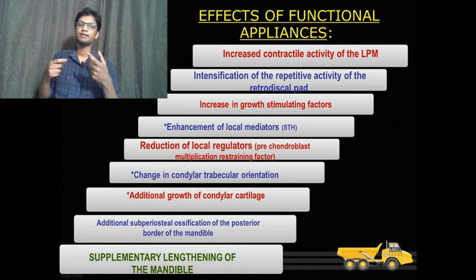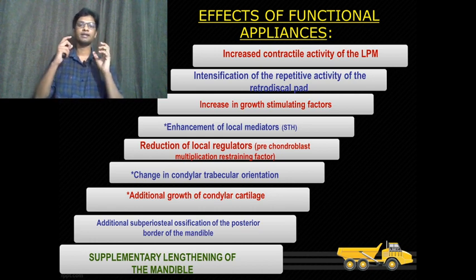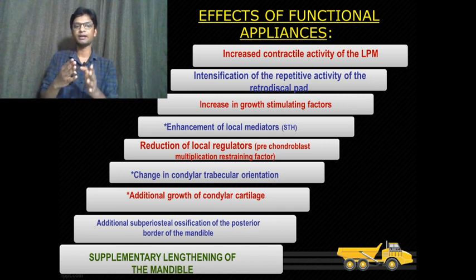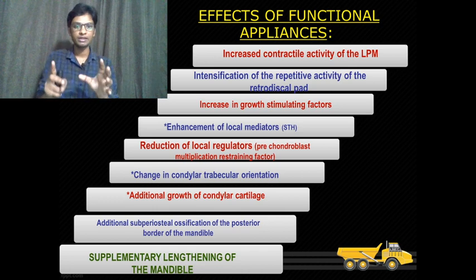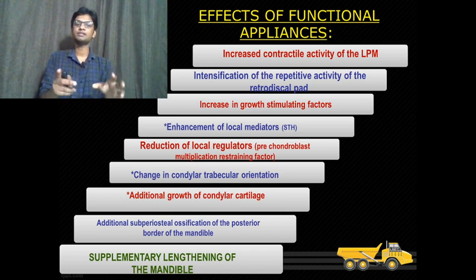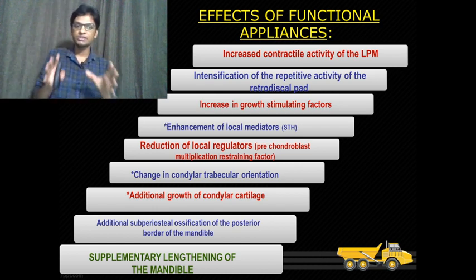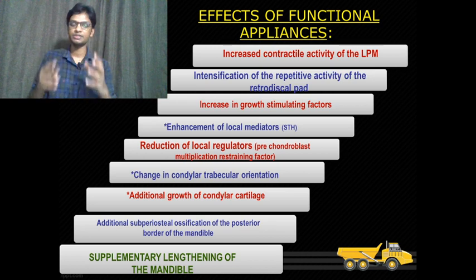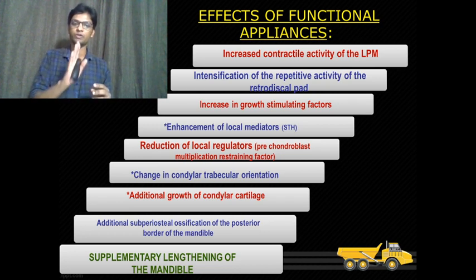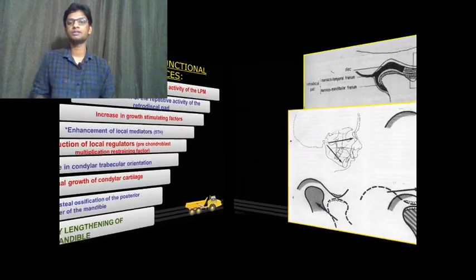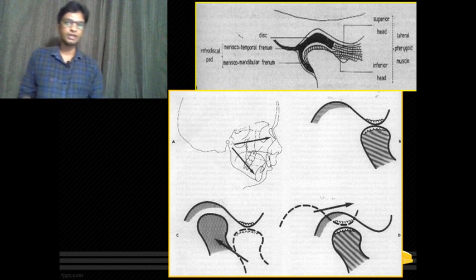Thus there will be an increase in growth-stimulating factors and enhancement of local mediators — that is STH — and a reduction of local regulators, which is the preosteoblast multiplication restraining factor. Then there will be a change in the condylar-tubercular orientation, additional growth at the condylar cartilage, and additional subperiosteal ossification of the posterior border of the mandible, resulting in supplementary lengthening of the mandible.